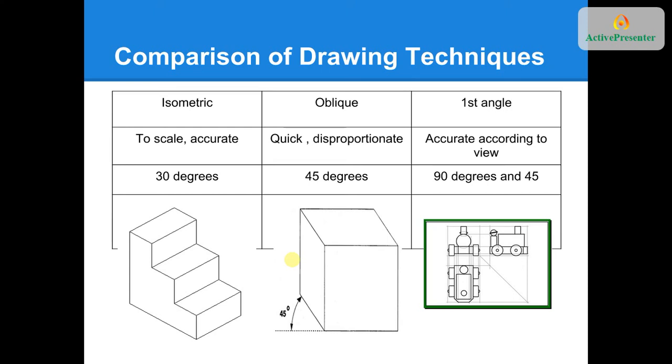But generally, first and third angle, if we can show three sides of an individual object, we can usually build that object. It's standardized, it has a set format, and you have to follow that format when drawing first or third angle orthographic projection.